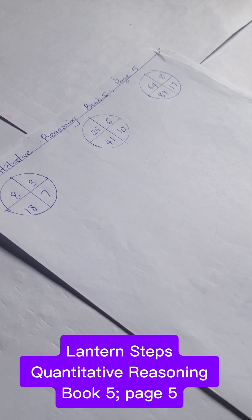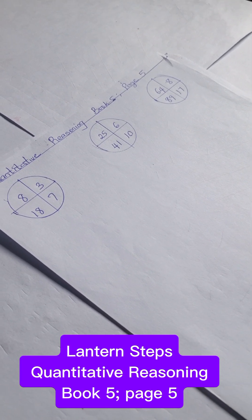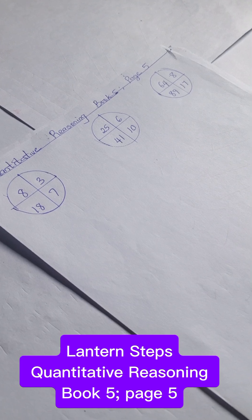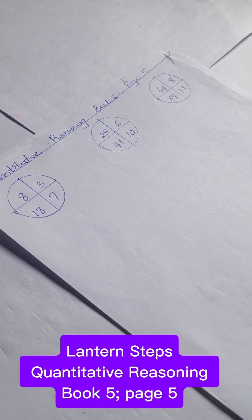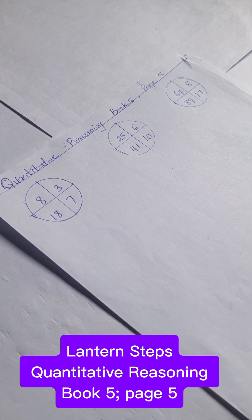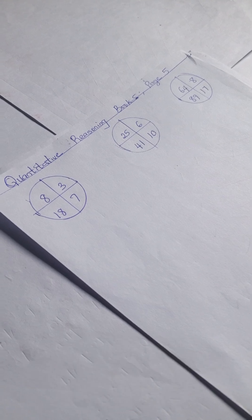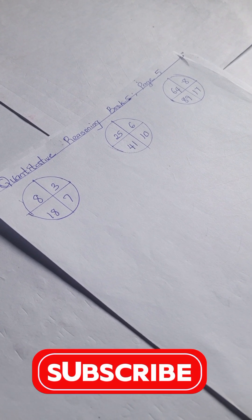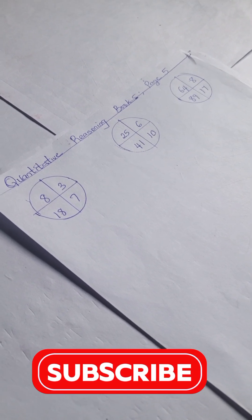Hello, welcome to quantitative reasoning solution section. Today we have quantitative reasoning from Lantern Step Book 5 Page 5. Thank you for joining in today, and to our new viewers, please do well to subscribe to this channel for more quantitative reasoning solutions and mathematics problems.